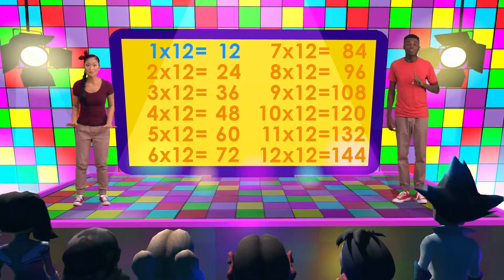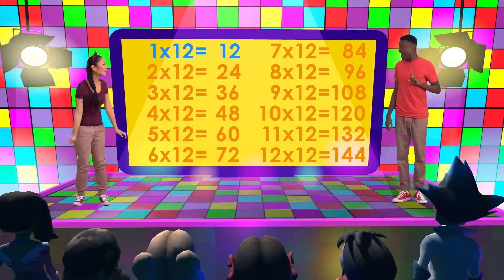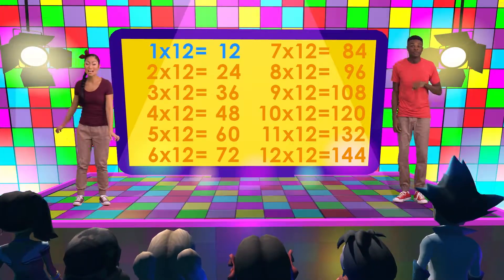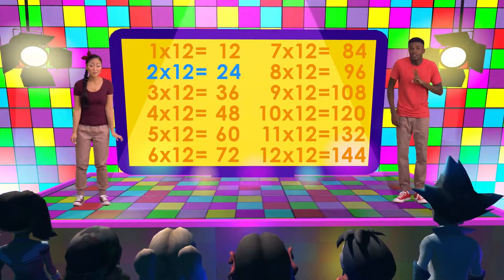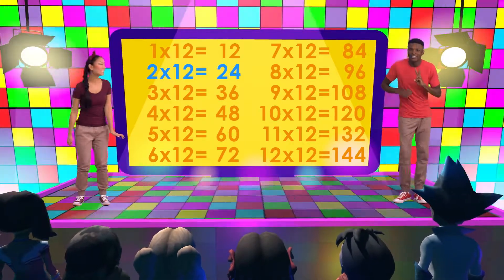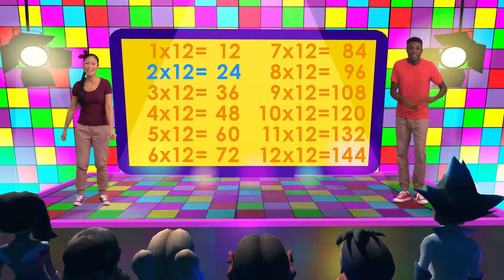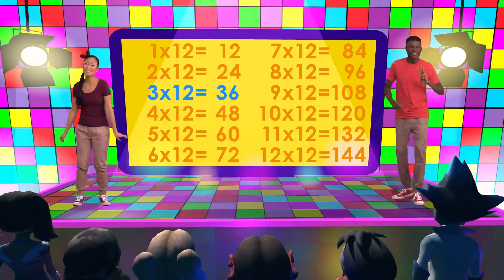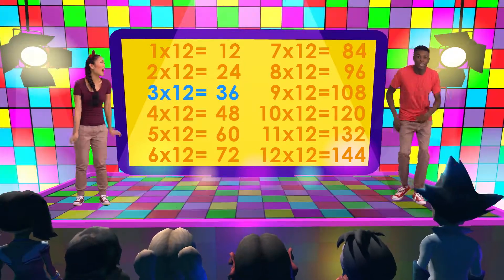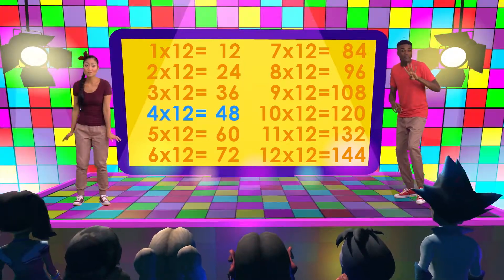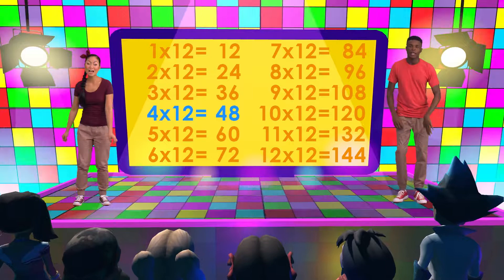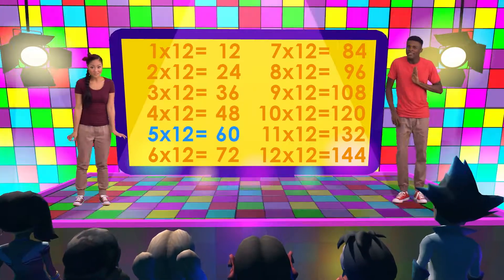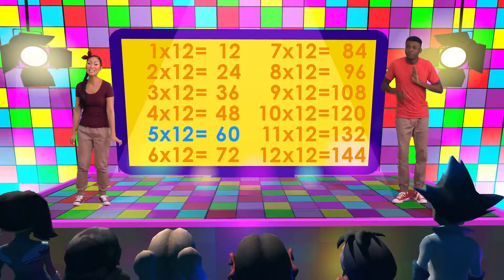1 times 12 is 12. 2 times 12 is 24. 3 times 12 is 36. 4 times 12 is 48. 5 times 12 is 60.